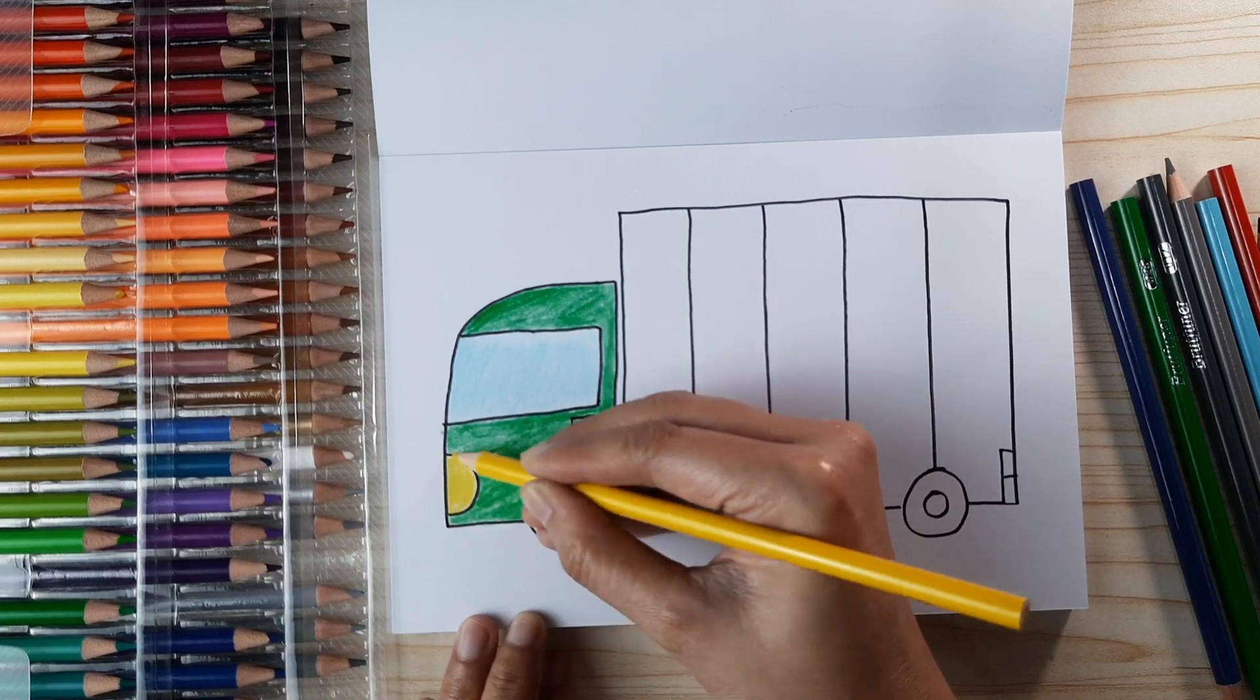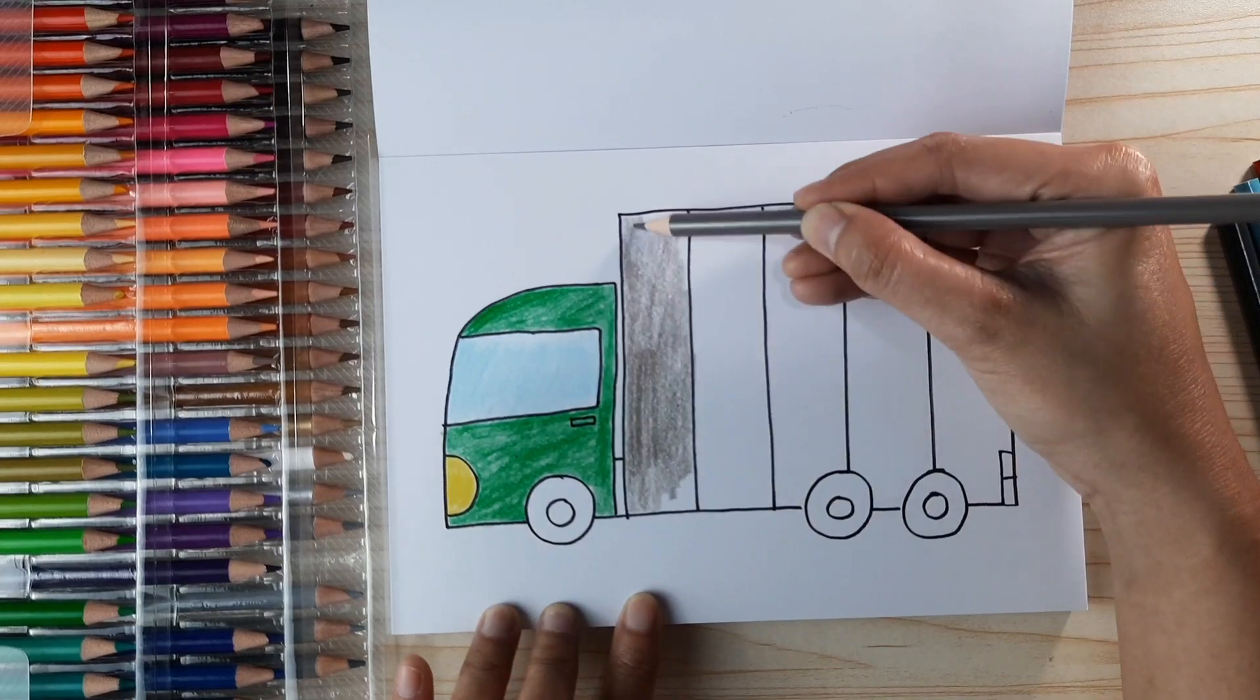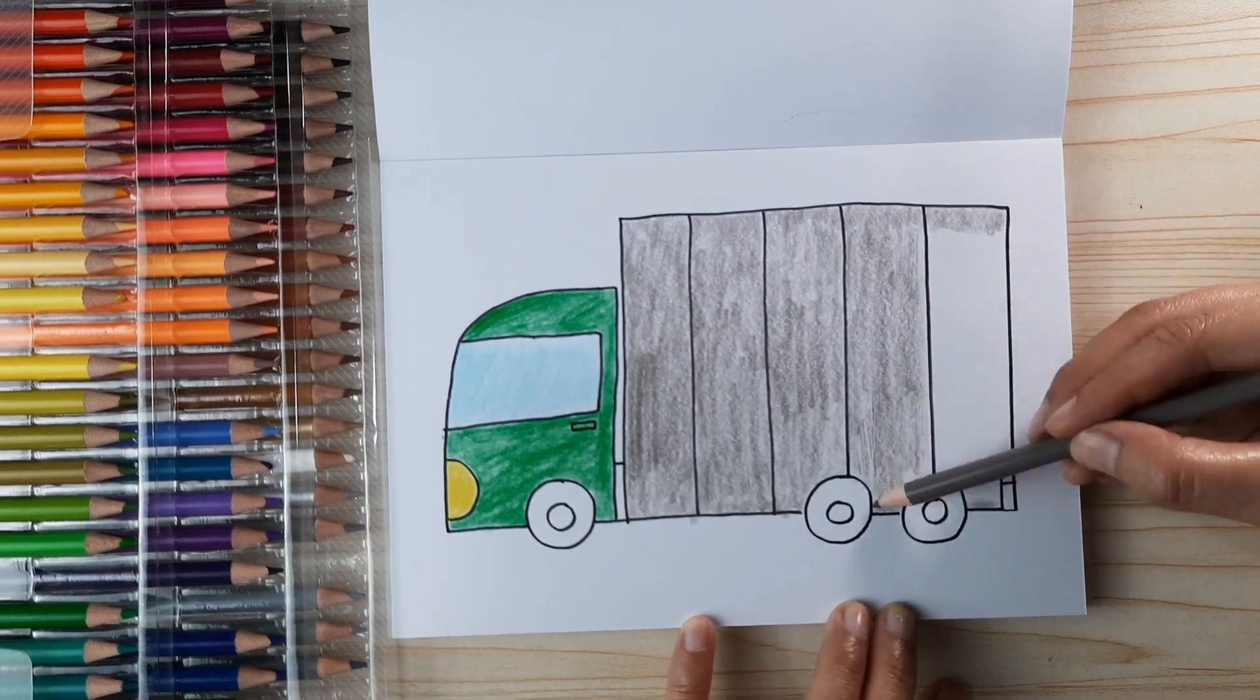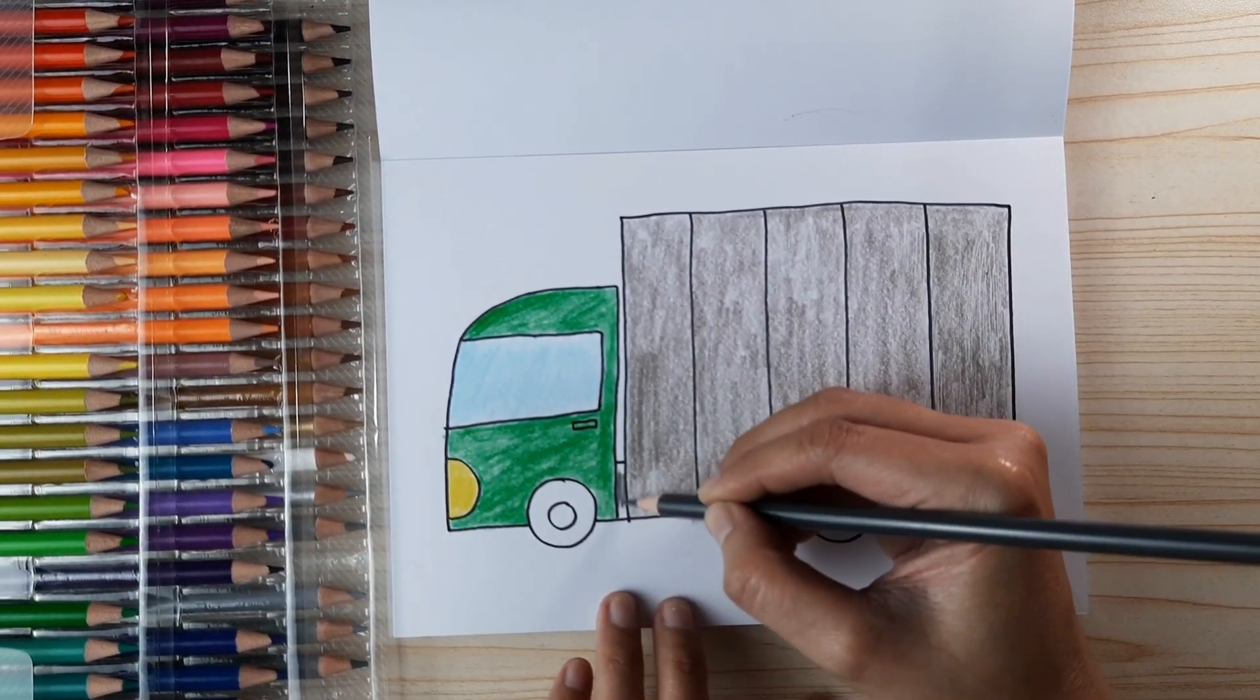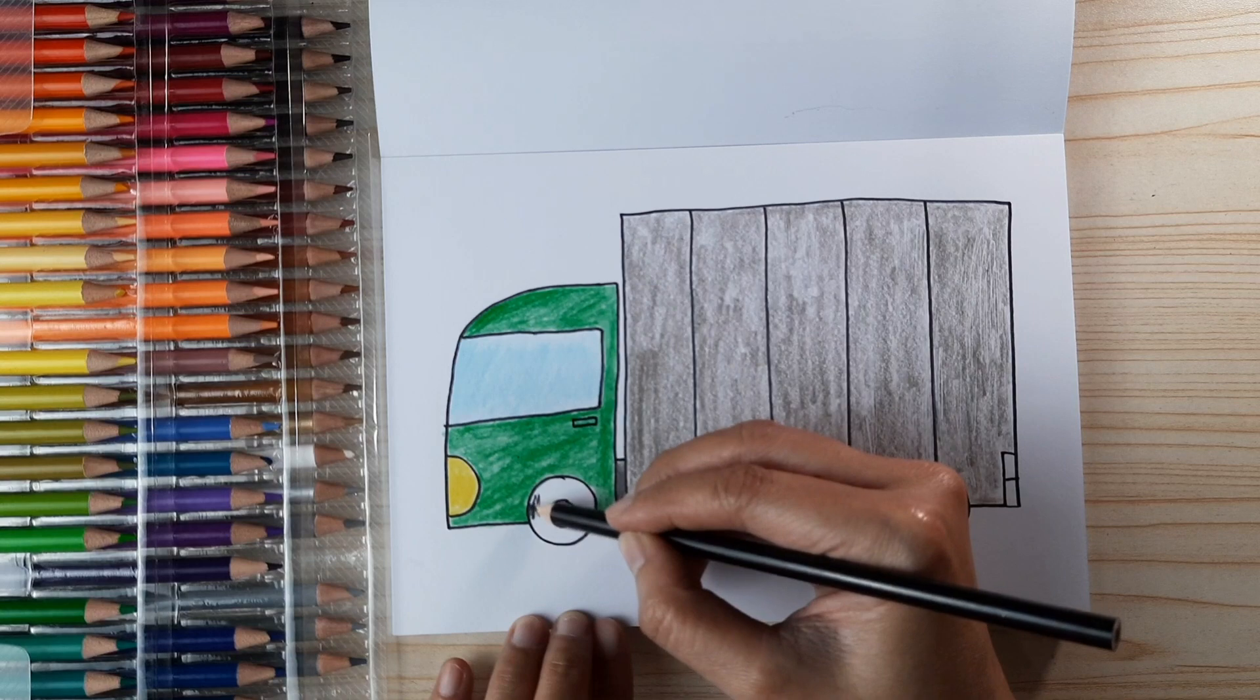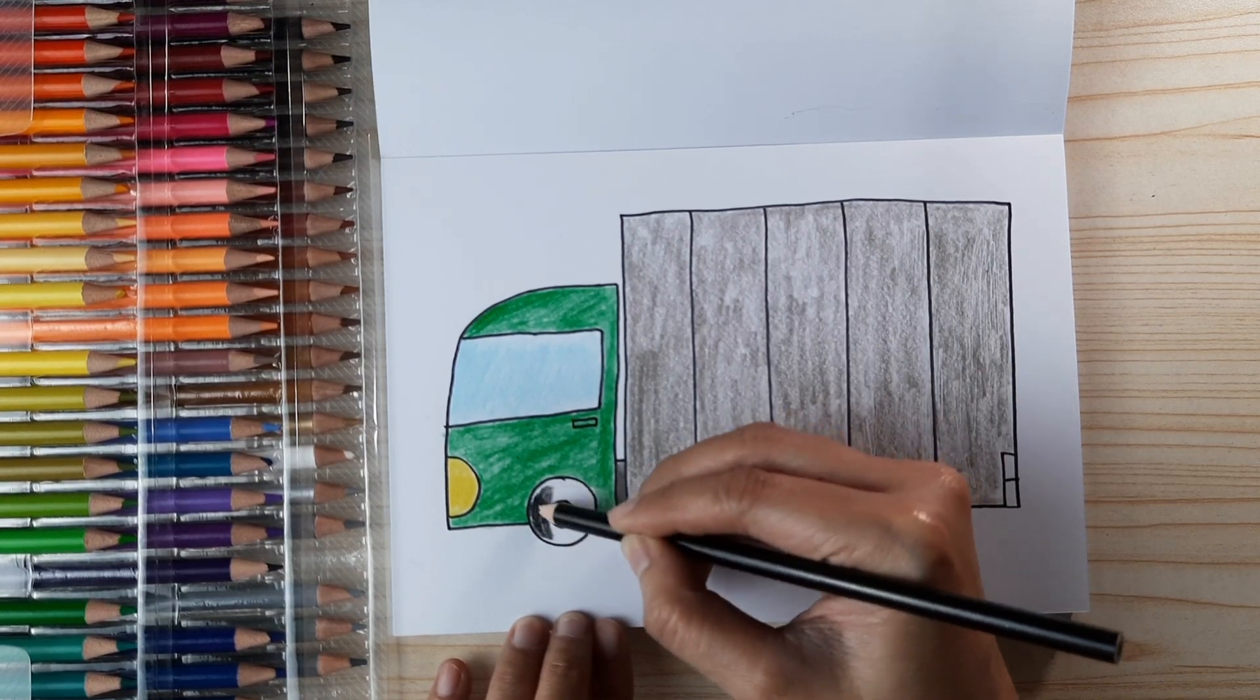Yellow as the light, the front light. For the container it's gray but with a bit brown, and then gray at the small gap between the front and the container and also the wheels, and of course black.